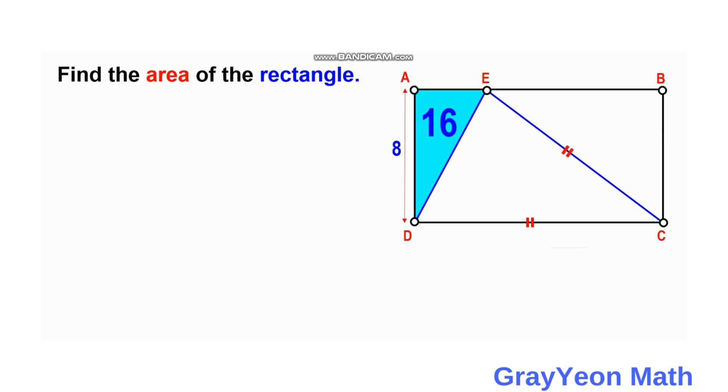First, we start with the given area, the 16 square unit triangle. So 16 is equal to one-half times the base times the height, and we can make the base as AE.